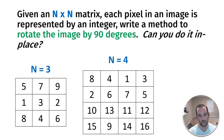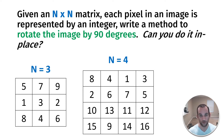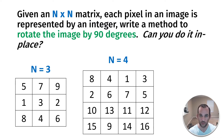A 2D array means each index in the array has its own array as well. Let's go over an example of rotating one of these by 90 degrees and see how that looks.